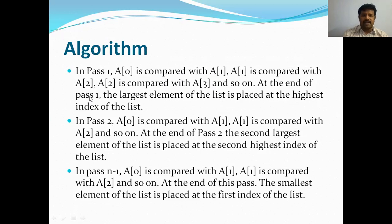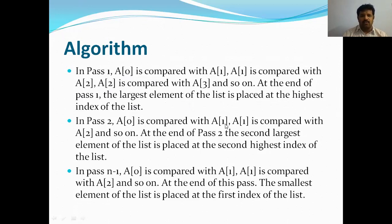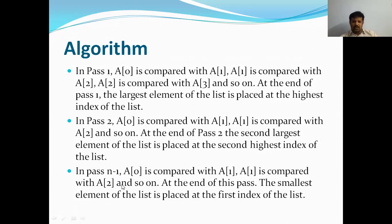At the end of pass one, the largest element of the list is placed at the highest index — that is, at the end of the list. In pass two, the same procedure is repeated, and at the end of pass two, the second largest element is stored at the second highest index. Similarly, with n minus one passes, all elements get sorted.